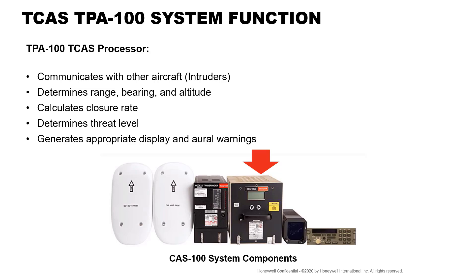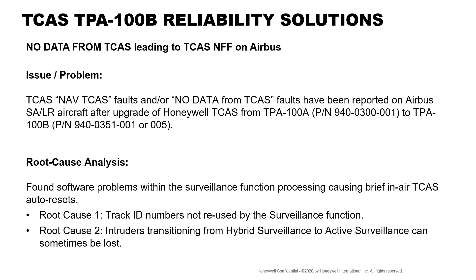Below are the CAF-100 system components. Regarding no data from TCAS issues leading to TCAS testing as no fault found on Airbus fleet: the problem reported is TCAS NAV and TCAS faults, and/or no data from TCAS faults, have been reported on Airbus single-aisle long-range aircraft after upgrade of Honeywell TCAS from TP-100A, part number 940-0300-001, to TP-100B, part number 940-0351-001 or -005. The removed units have been tested at Honeywell RNO as no fault found.